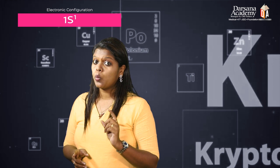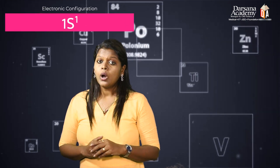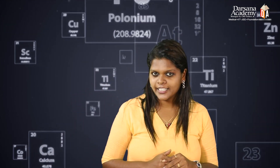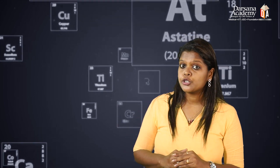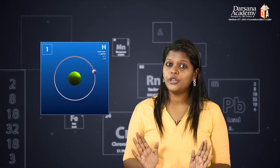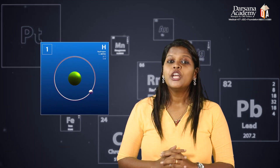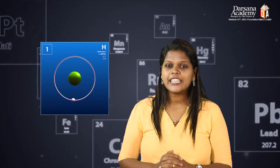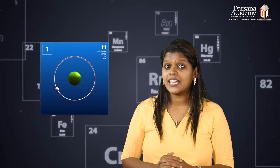The electronic configuration of Hydrogen is 1s1. That means it has one electron and one proton. And there are no neutrons — neutrons are not present in the common Hydrogen atom.